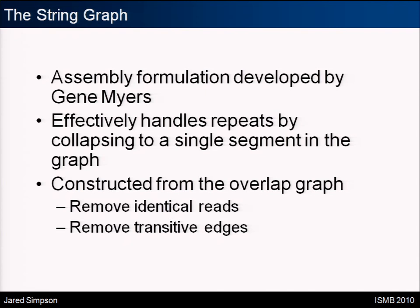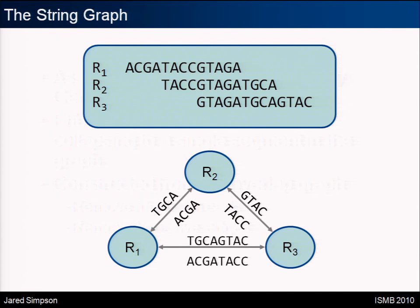You start from the new overlap graph and perform two transformations. First, you remove identical reads — reads that contain the same sequence, where one read is a substring of some other read. Here we have three reads shown at the top and the overall graph. Each edge in the graph is labeled with a sequence. This edge is labeled with the unmatched portion of R2, and here the label corresponds to R1. The resulting assembly would contain the sequence of R2, so the assembly is seen as a traversal of this graph.